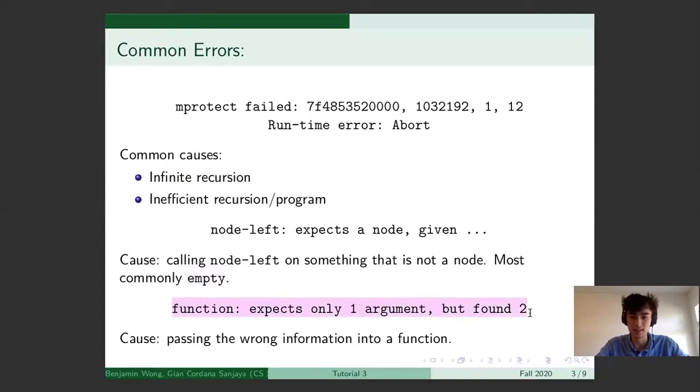The last error is function expects only one argument but found two. And this is when you're passing something into the function that it doesn't expect. Suppose we made our tail recursive sum two with sum between and you passed in to sum between n because you're so used to passing n into sum two.